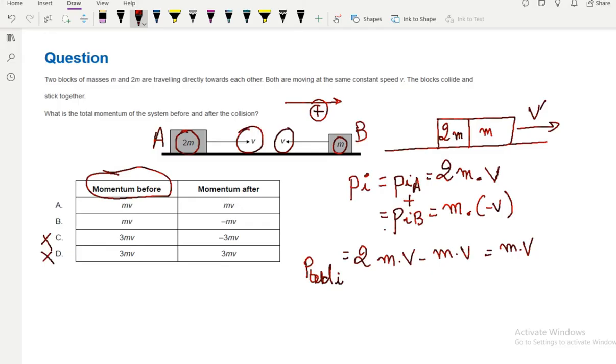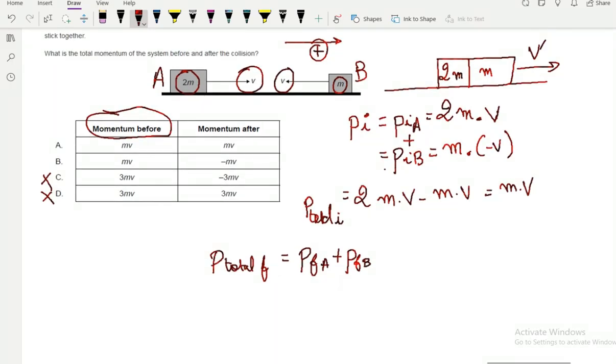Now the final momentum, P total final, equals P final A plus P final B, the final momentum of A plus the final momentum of B. We see that they're gonna stick together.